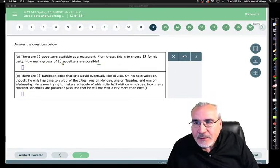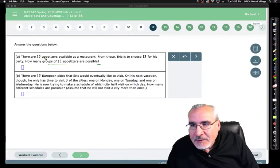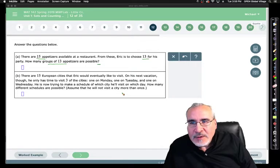How many groups of 13 appetizers are possible? Groups of 13 appetizers. I don't know the question yet, so let me see. There are 15 appetizers available at a restaurant. From these, Eric is to choose 13 of them. So there's 15 available, he can choose 13 of them, and it's sort of implied without replacement.